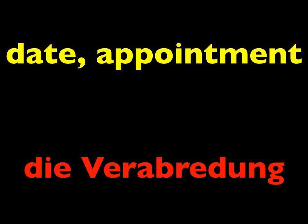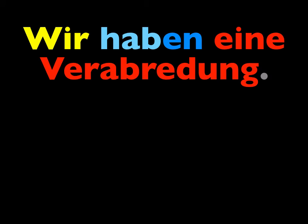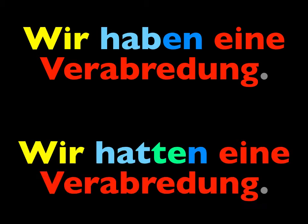The word for a date, like 'I have a date tonight,' is die Verabredung. Say that word: die Verabredung. So 'we have a date': wir haben eine Verabredung. Make it the past tense. Wir hatten eine Verabredung. Good.